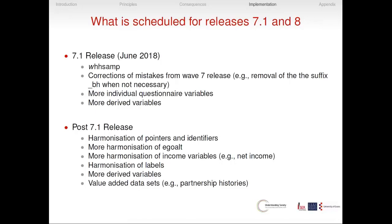We will work toward full harmonization of ego-alt, more harmonization of income variables — for example, the derivation of net income is not currently fully harmonized. We want to harmonize labels and add more derived variables. In the longer term, we want to add more value-added datasets — for example, the partnership histories, which at the moment exist as separate files, and we would like to turn them into a fully harmonized file.